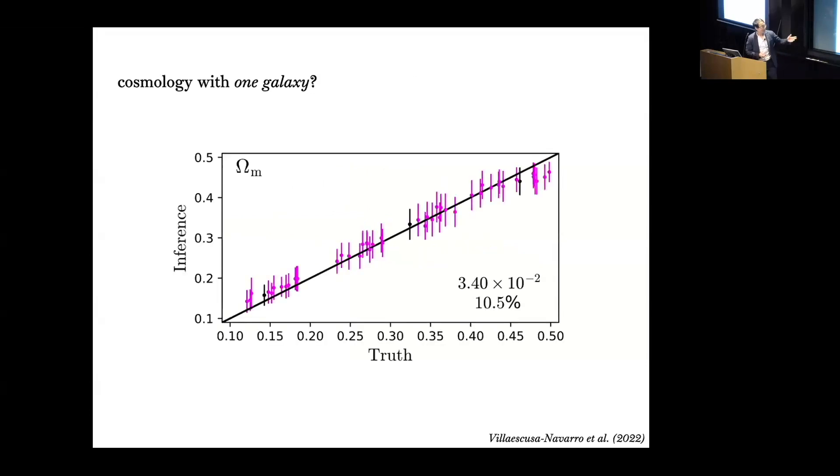This is a nice figure illustrating their results which is on the x-axis the true omega matter value of test galaxies and on the y-axis the inferred omega matter value from their neural network. One of the things this figure nicely illustrates is that they're able to derive unbiased omega matter constraints and also get precision that's pretty interesting of roughly 10 percent.